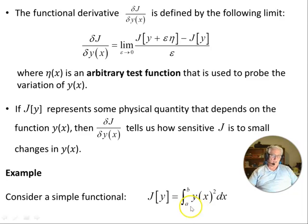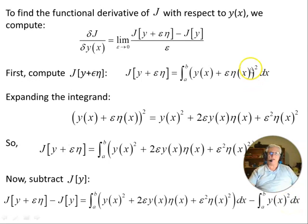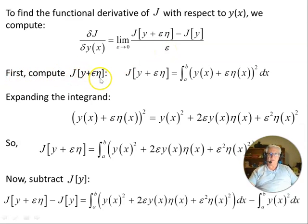Let's consider a simple functional J[y] = integral from a to b of y(x)² dx. Let's see how J[y] changes with respect to small changes in y(x). To find the functional derivative of J with respect to y(x), we compute J[y + ε·η] minus J[y], put that over ε, and take the limit as ε goes to zero. So first we compute J[y + ε·η(x)] — remember, J[y] was just y(x) all squared, but now we put in y(x) + ε·η(x) and square it all.